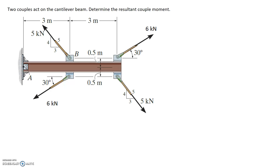Two couples are acting on a cantilevered beam and we need to determine the resultant couple moment, which is the total of both of them together. We have one couple made up of two 5kN forces acting in opposite directions, and the other couple is formed by two 6kN forces acting in opposite directions.